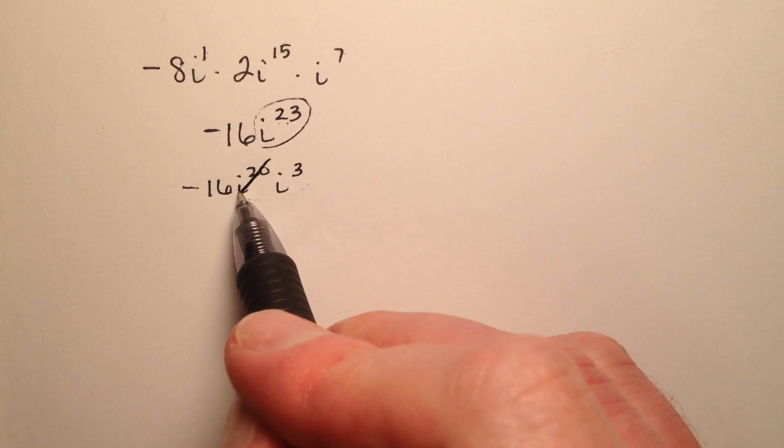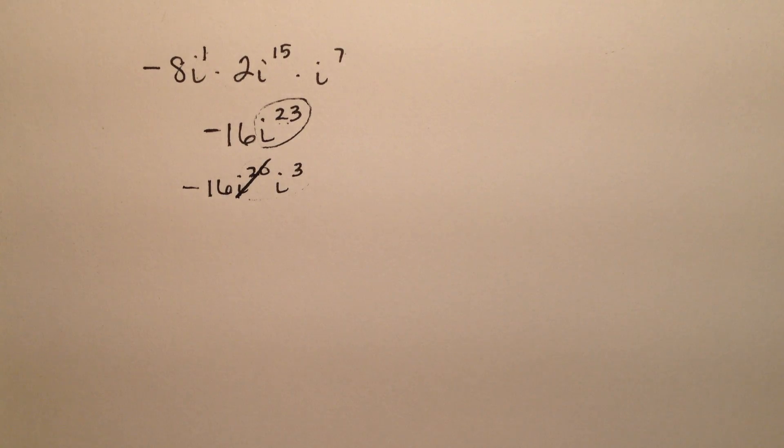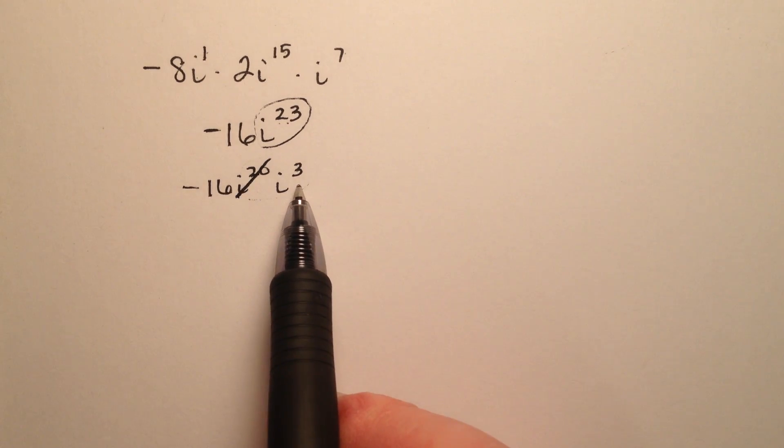So the i to the 20th we know is a multiple of 4, so that's just going to be 1, which when I multiply by the 1, it doesn't matter, it just goes away.